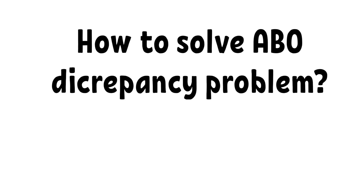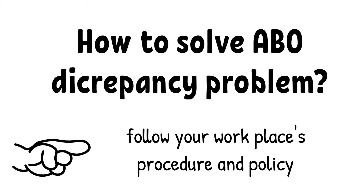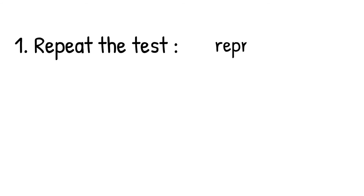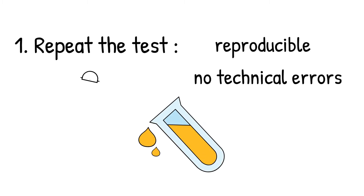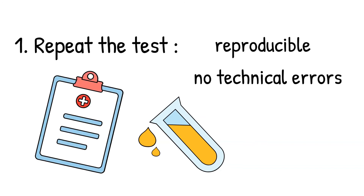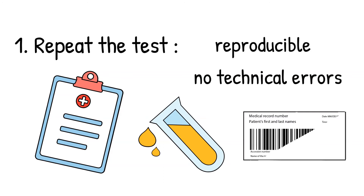I have some suggestions for how you can solve the problems when you have an ABO discrepancy. However, keep in mind that you have to follow your workplace procedures and policy when approaching ABO discrepancy. First, repeat the test — make sure that the reaction you got is reproducible and there is no technical error in the process. Believe me, we can solve many problems by simply repeating the test. Things happen: maybe you got distracted, maybe the tubes weren't labeled correctly, maybe someone switched the reagent — who knows. Just repeat the test.